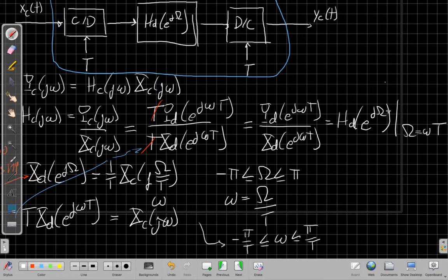So the overall continuous time filter is determined by the discrete time filter with this change of variables for frequency, saying I replace the discrete time frequency by continuous time frequency times T. That's a big deal.